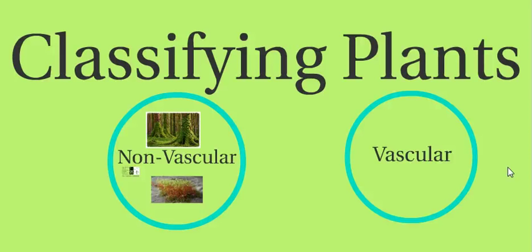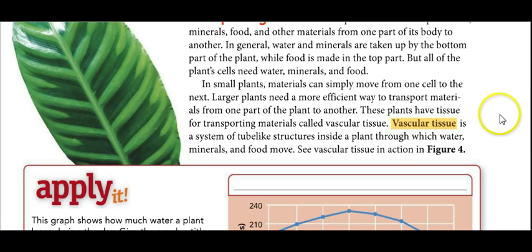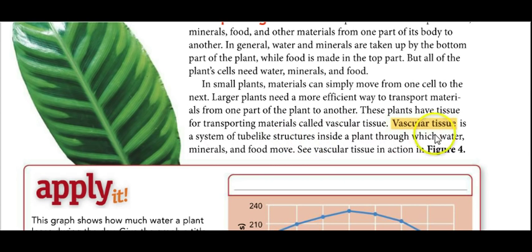The first category we're going to look at is nonvascular. But before we do that, let's look at a review of what vascular tissue is. Vascular tissue is a system of tube-like structures inside a plant through which water, minerals, and food move.